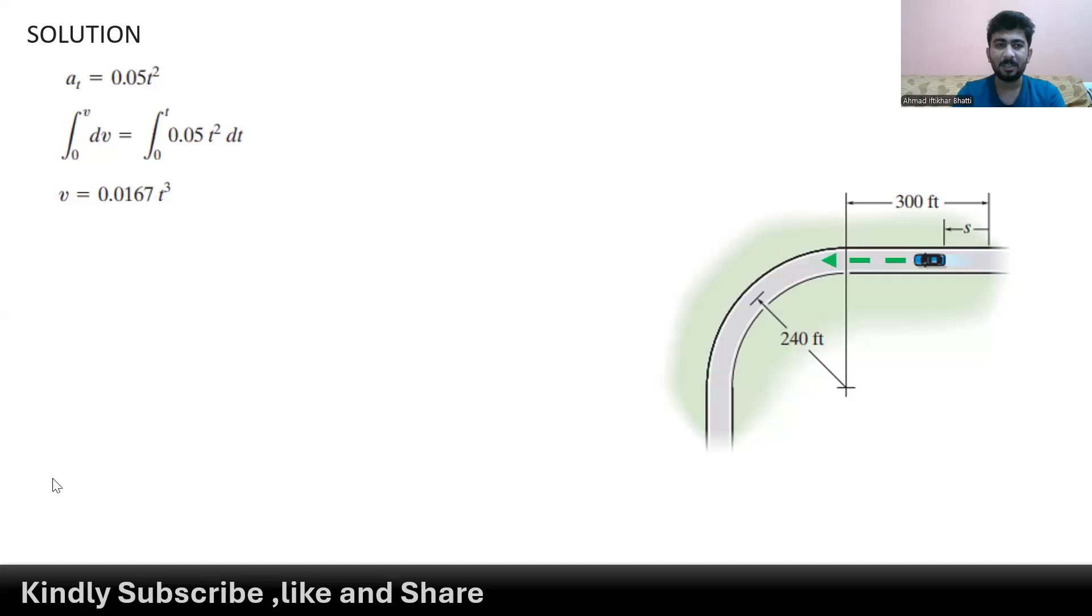If we integrate, we get v and we get t³ over 3, so we get 0.0167t³. As we know that t is basically 18 seconds, we can put it here so we get 0.0167 multiply 18 raised to the power 3, which gives us 97.2 feet per second.